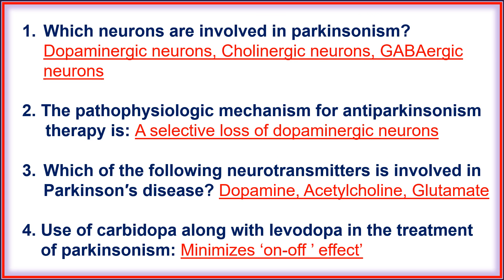Question one: which neurons are involved in parkinsonism? There are dopaminergic neurons, cholinergic neurons, and GABAergic neurons. Question two: the pathophysiologic mechanism for Parkinson's therapy is a selective loss of dopaminergic neurons. This is the major mechanism by which Parkinson's disease occurs.